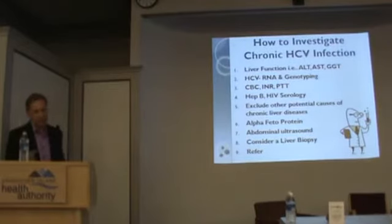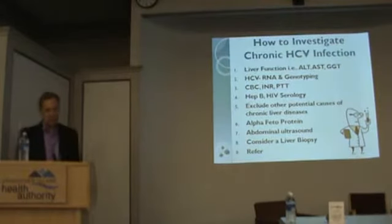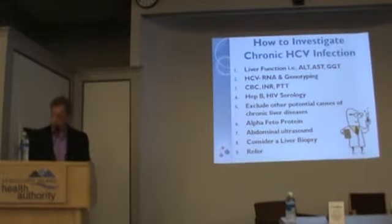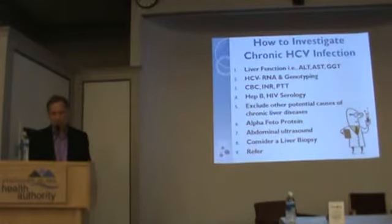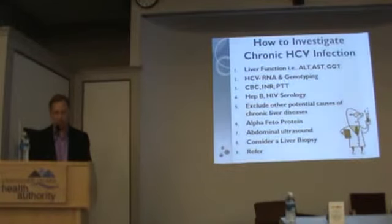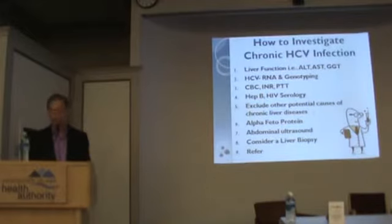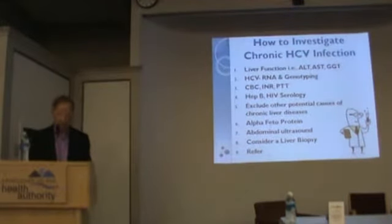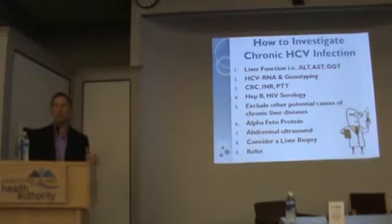So how do we investigate chronic hepatitis C? This is in the handout. It really talks about at least doing liver enzymes, hepatitis C RNA and genotyping, coagulations, testing for hepatitis B and HIV, and excluding other causes of liver disease. Alpha-fetoprotein — that's now questionable whether it's very useful.